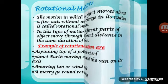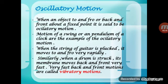Oscillatory motion is when an object moves to and fro, or back and forth, about a fixed point. Examples are the motion of a swing and the pendulum of a clock. When the string of a guitar is plucked, it moves to and fro very rapidly. Similarly, when a drum is struck, its membrane moves back and forth very fast — these are called vibratory motions.